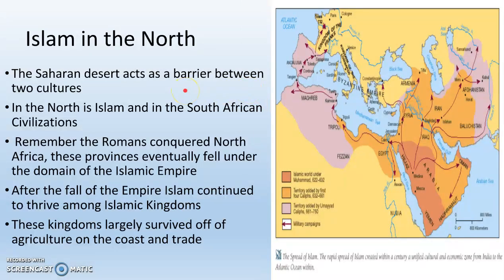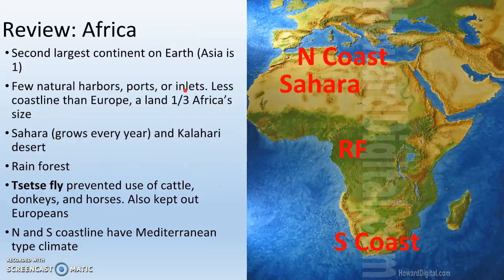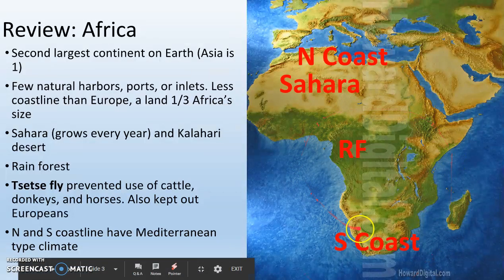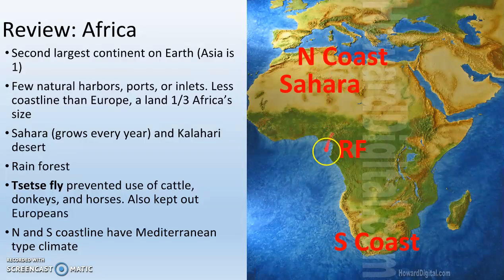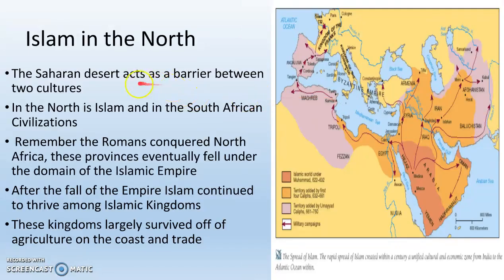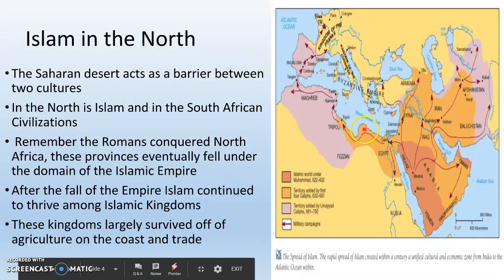The big thing we need to know about Africa is that northern Africa and sub-Saharan Africa are very different places. The Sahara Desert has really not a whole lot of water, so people up here and people down here really don't interact for most of human history because of this desert. The Sahara Desert acts as a barrier between two cultures.